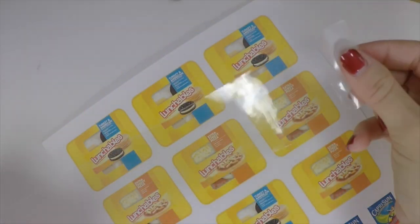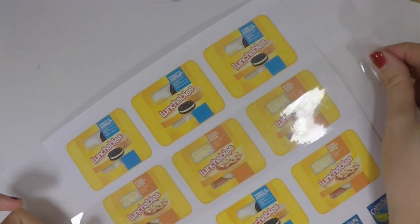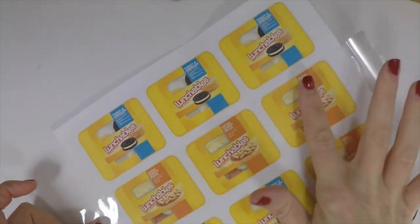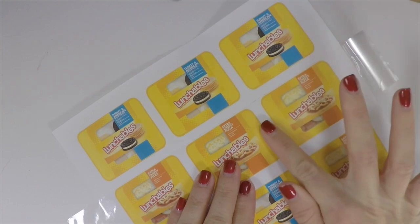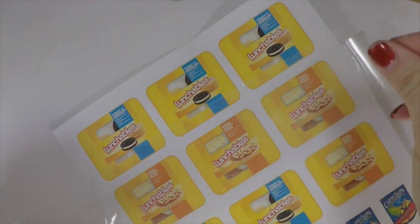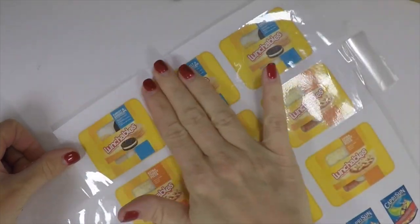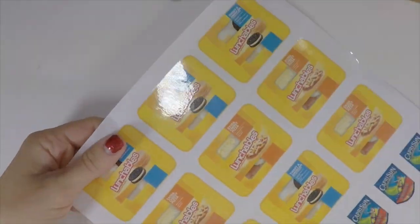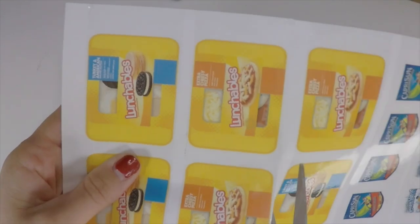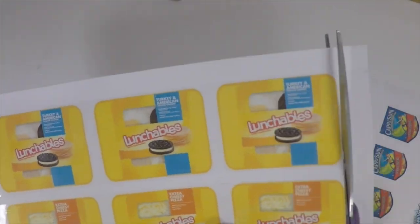You're gonna start by taking your packaging tape and covering your printables. You only need to cover the tops and not the bottoms. You can find these printables on our blog at americangirlideas.com or there's a link in the description. Once you're done with the tape, cut out all of the printables and have them ready on hand.